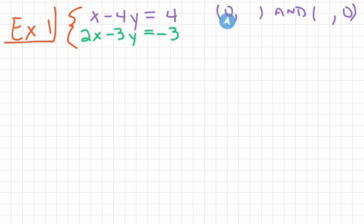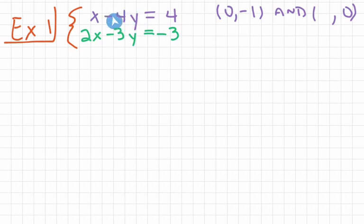We're going to start off with our 0 value, which is going to get substituted in for x. So when we substitute 0 in for x, we have 0 minus 4y — we don't really need that 0 — so what we have now is negative 4y equals 4. Divide both sides by negative 4, and we get y equals negative 1. So our first ordered pair is going to be 0, negative 1. For our second ordered pair, we're substituting 0 in for y, so x minus 4 times 0 leaves just x equals 4.